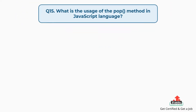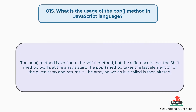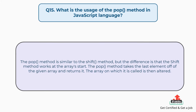Question number fifteen: what is the usage of the pop method in JavaScript? The pop method is similar to the shift method, but the difference is that the shift method works at the array's start. The pop method takes the last element off of the given array and returns it, and the array on which it is called is then altered.